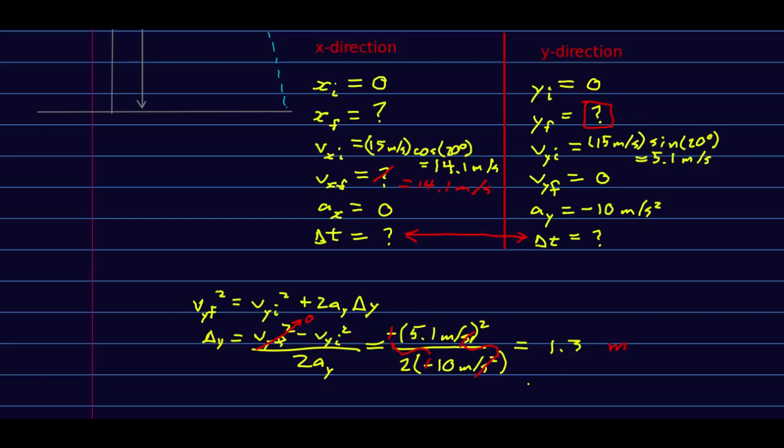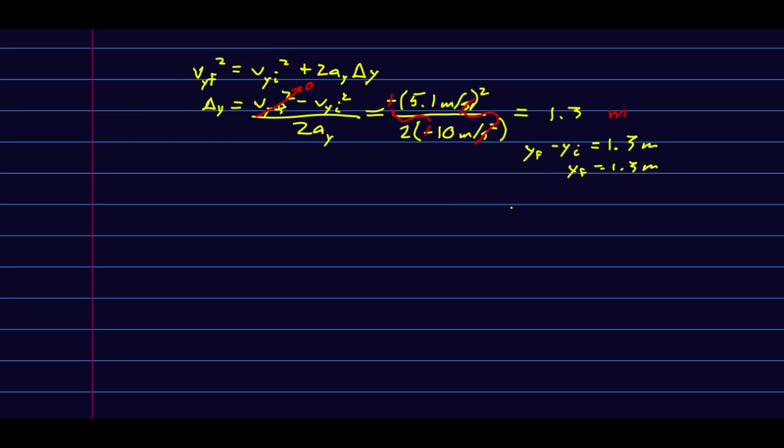My calculator informs me that this comes out to 1.3 meters. Now watch it: that is y_f minus y_i equals 1.3 meters, but of course y_i is just zero, so y_f is 1.3 meters. It goes 1.3 meters up from where it started.